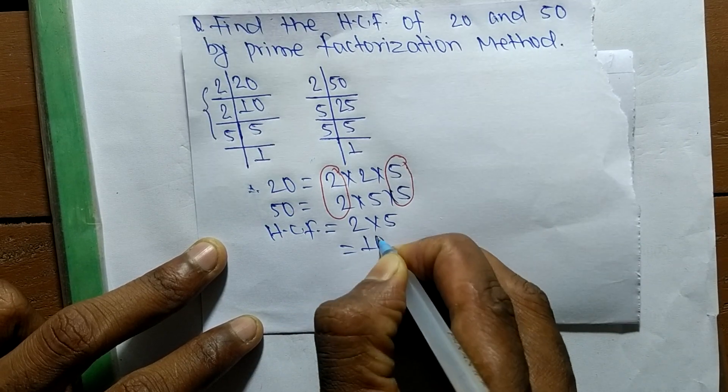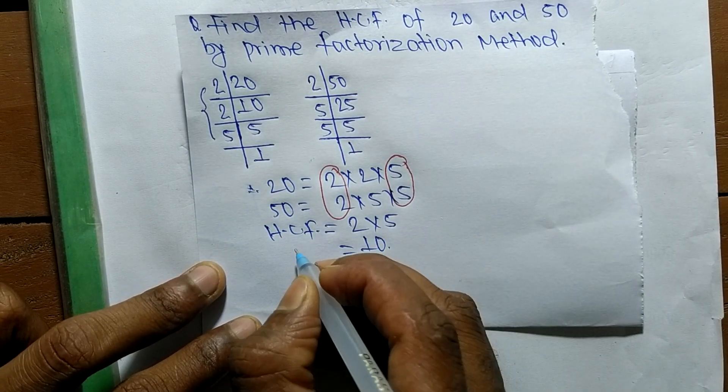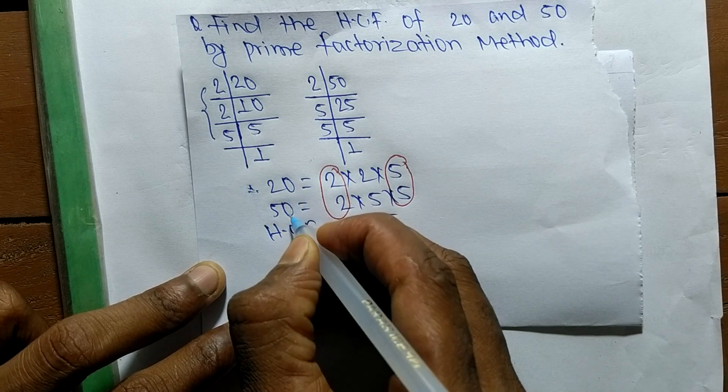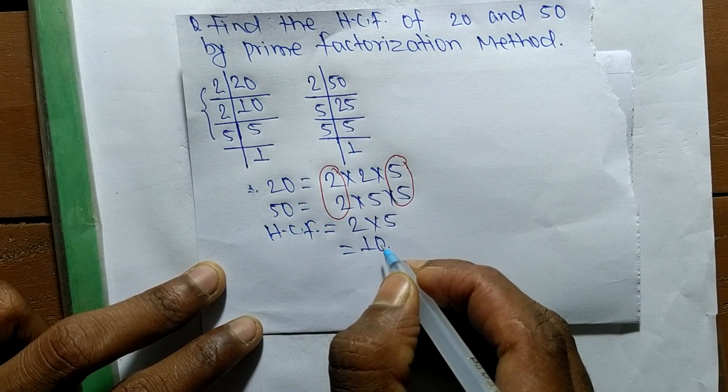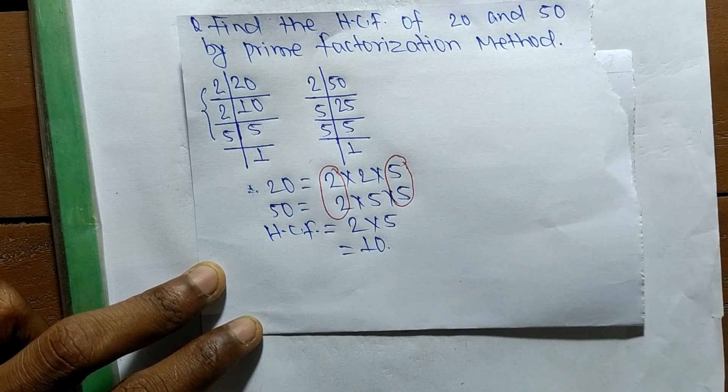So it is equal to 10. So 10 is the highest common factor of 20 and 50. So this much for today and thanks for watching.